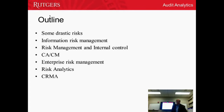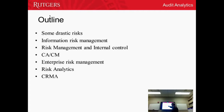We are going to talk about seven items. We'll first talk about some drastic risks to get your attention. Then we're going to define information risk management, then risk management and internal control, then continuous auditing and continuous monitoring, then enterprise risk management, risk analytics, and finally what we call continuous risk monitoring and assessment.